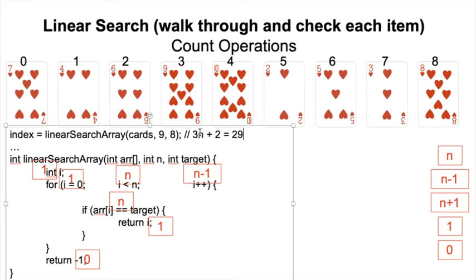That's quite a bit more than our five from the best case. And this is a small array. If the array is much larger — 1,000, 10,000, 20,000 items — you're really going to see that the best case five maintains its small value, because it doesn't depend on how many elements there are. But the worst case is going to grow directly as a function of the size of the array n. Our goal is to express our growth rate function — our operation counts — in terms of n, the size of the problem, in order to generalize it.